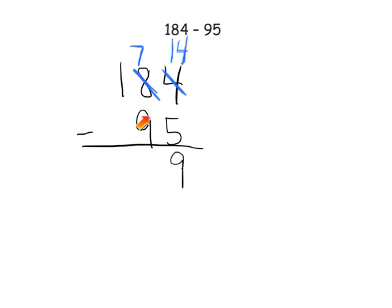Now we look at the tens column. We have seven tens, and we're going to take away nine tens. Do we have enough? Nope. So we're going to unbundle this hundred, leaving us with zero hundreds. When we unbundle the hundred, we get ten tens, which means instead of seven tens we now have seventeen tens. Seventeen take away nine — that's eight. So that's eight tens.